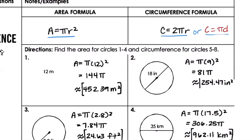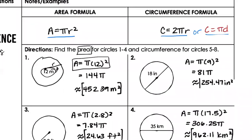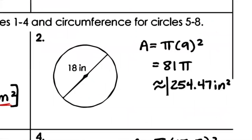Number one: there's a circle where the distance from center to edge is 12 meters, so the radius is 12 meters. Using the formula: Area = πr². Substitute r = 12: Area = π × 12² = π × 144 = 144π. Punching into the calculator: 144 × 3.14 ≈ 452.39 meters squared. Remember, area uses square units because you're multiplying meters × meters.